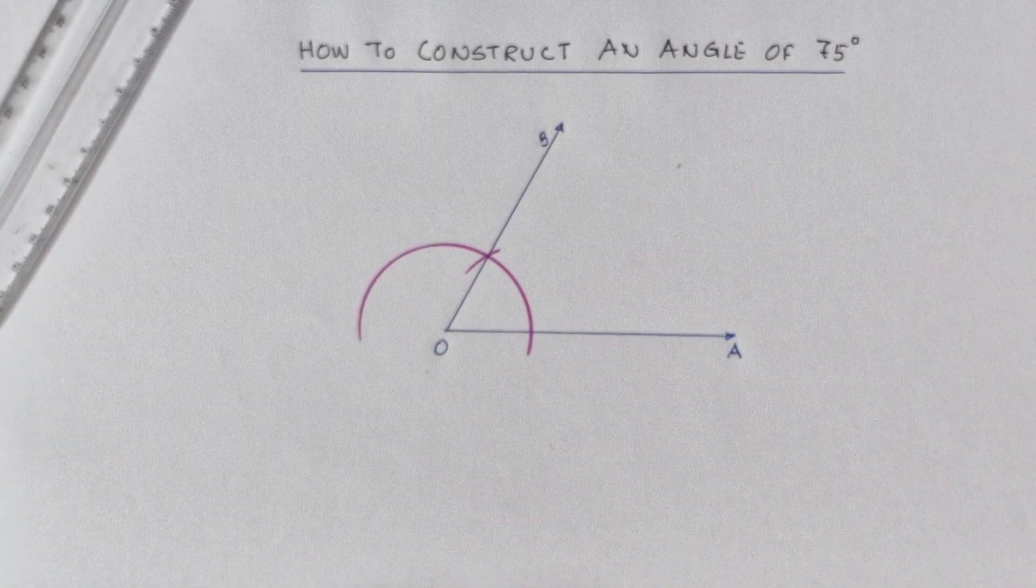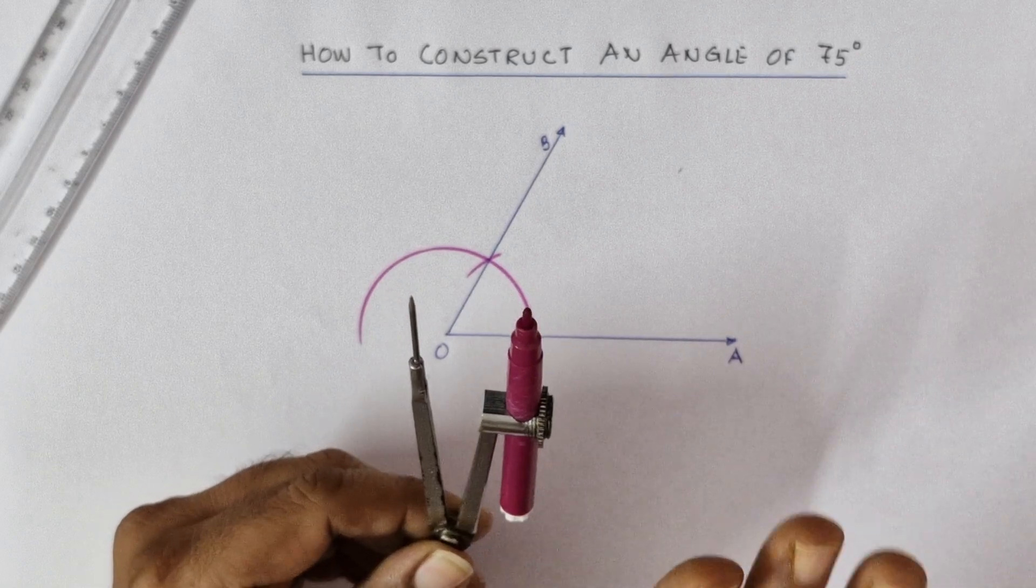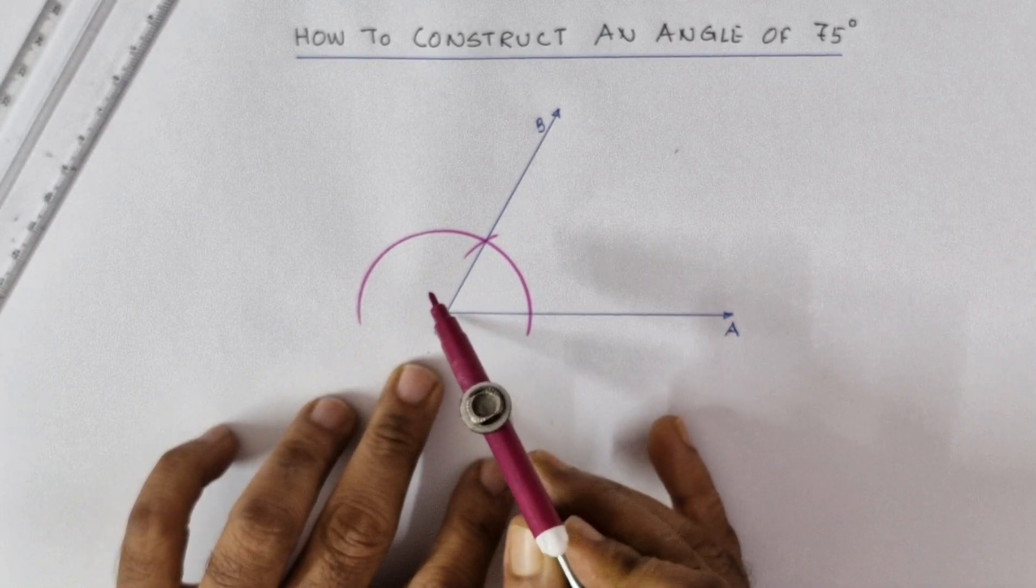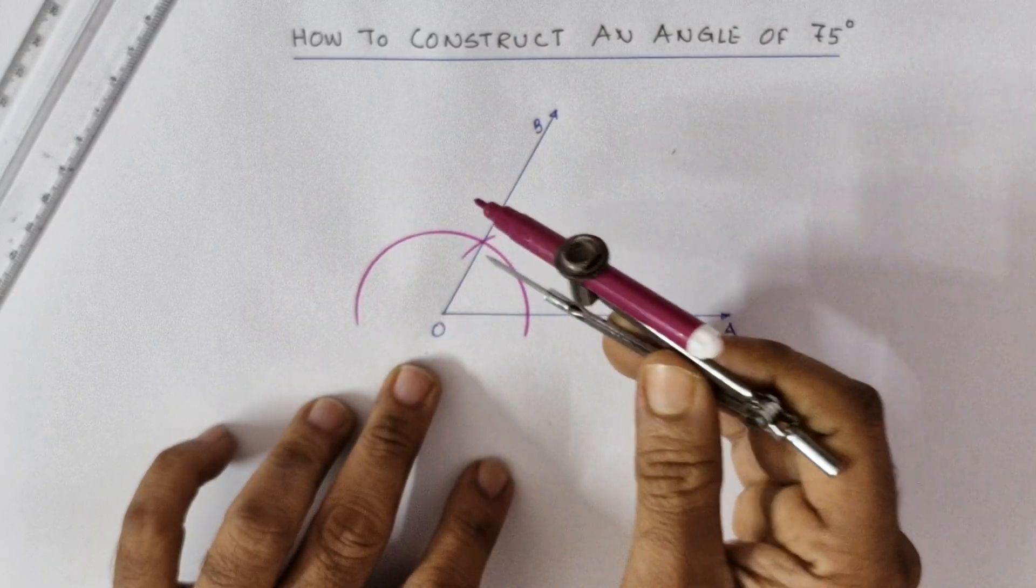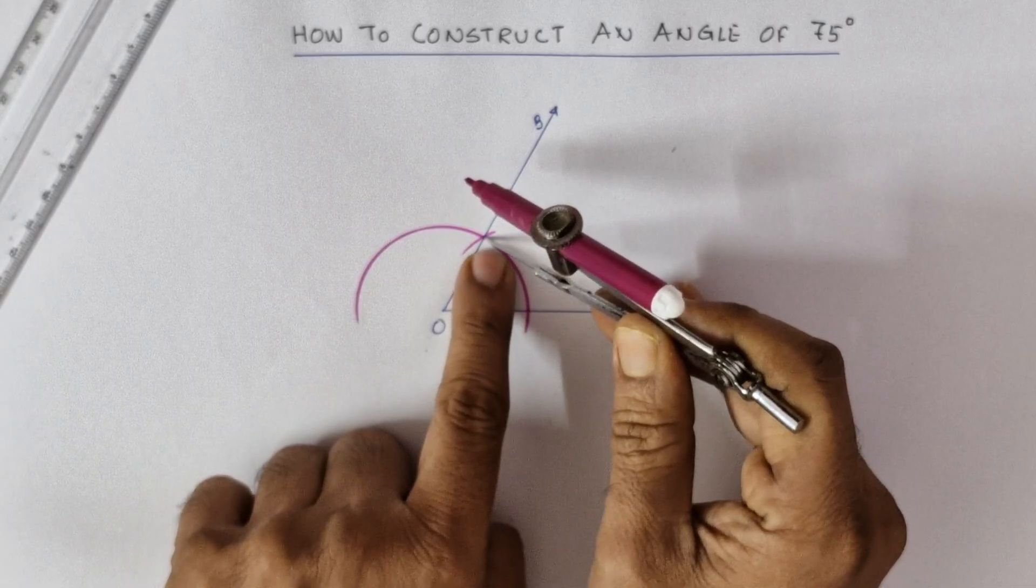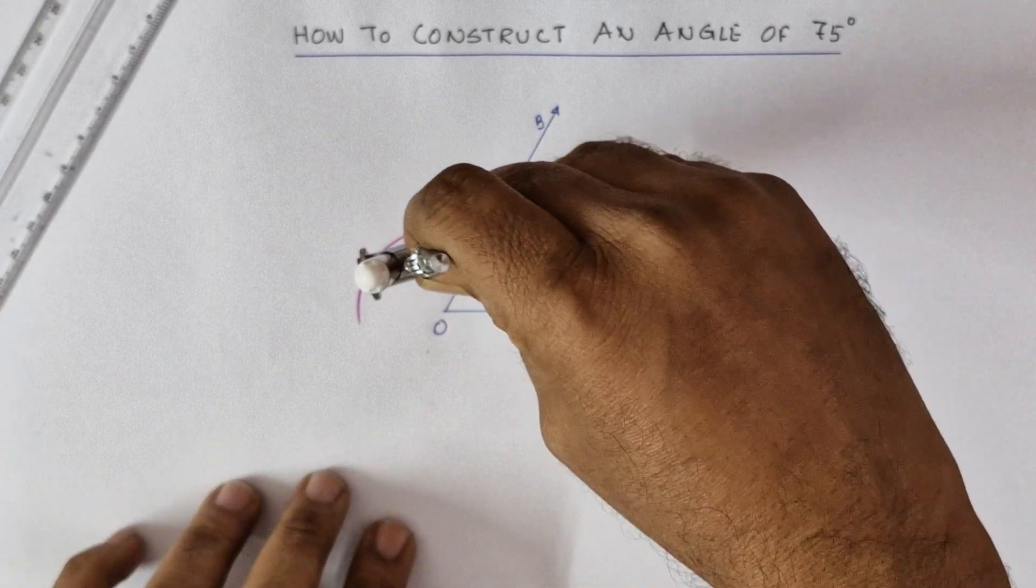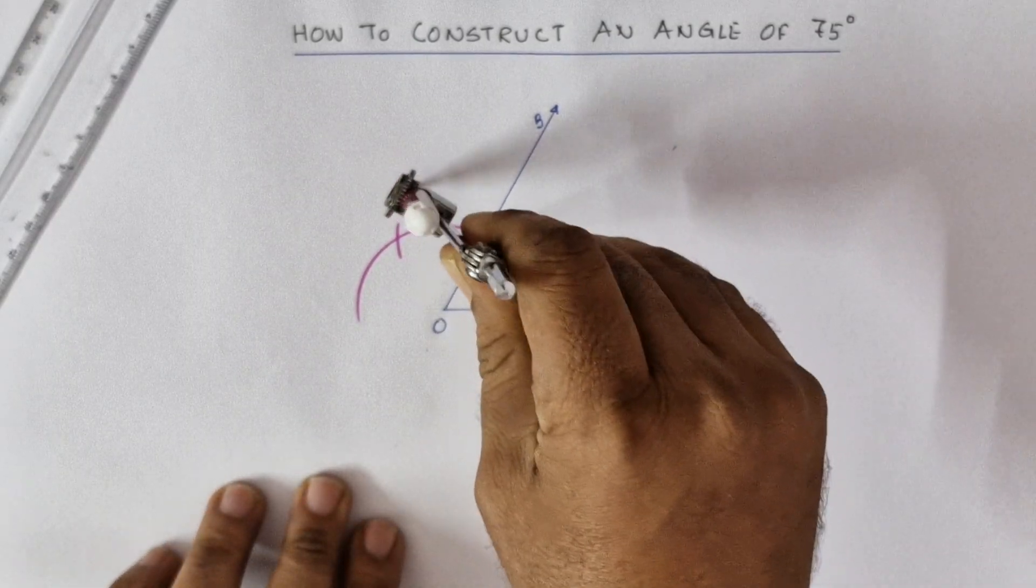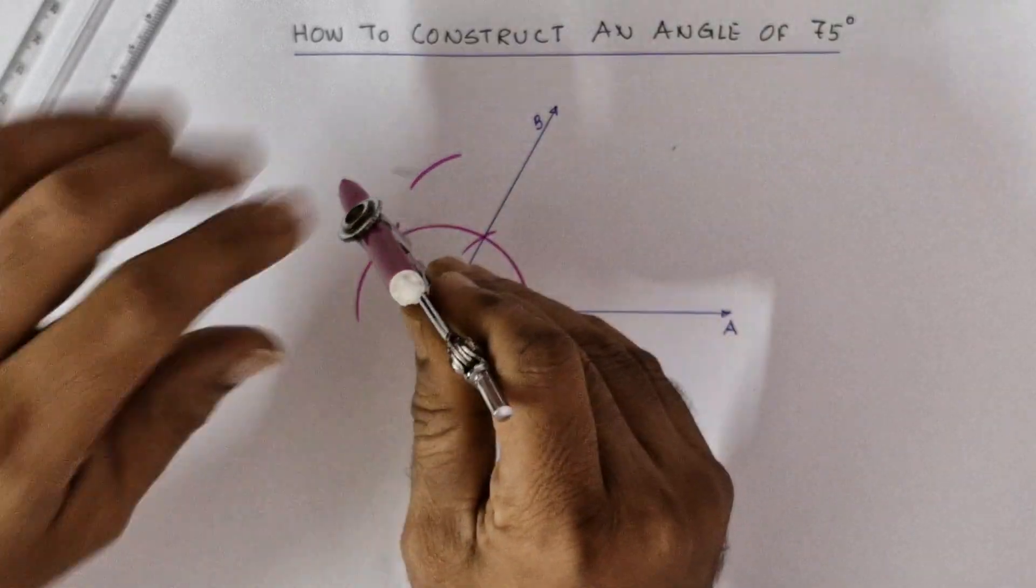Now what do you need to do? Without changing the radius of the compass, construct an angle of 90 degrees from O. Point the needle here in this first intersection point and draw another arc. Now draw a 90 degree as usual - draw this arc, point the needle in the second intersection point and draw an intersection arc here.